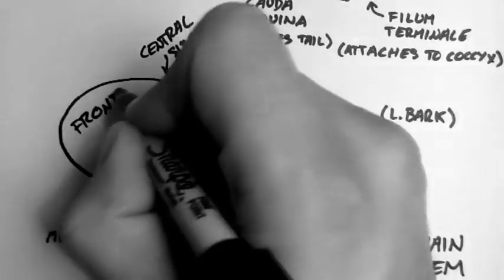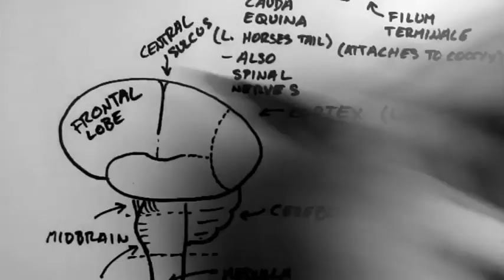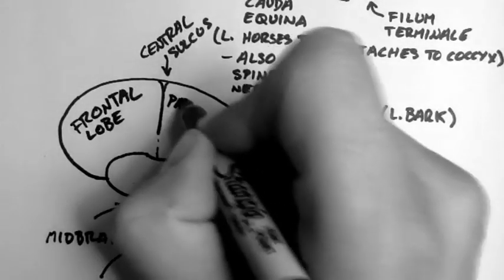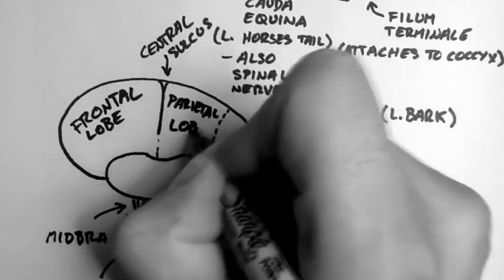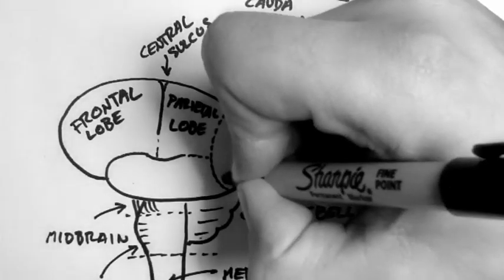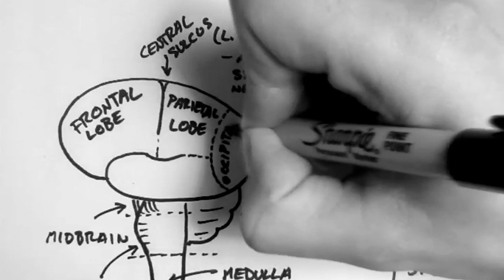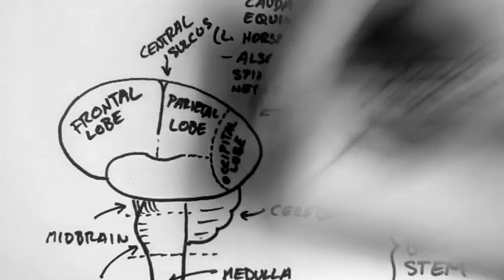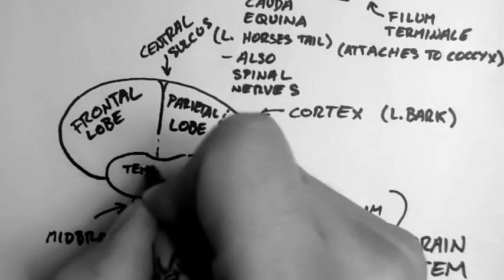Over here is the frontal lobe. And behind the central sulcus is the parietal lobe. At the back is the occipital lobe. And here at each side is the temporal lobe.